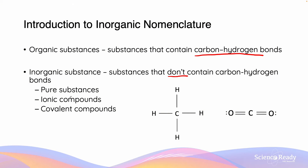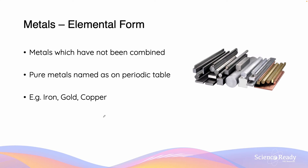Inorganic substances are pure substances, and they can be broken down into different subclassifications, including ionic compounds and covalent compounds. Metals are examples of pure substances. We describe metals to be in their elemental forms when they have not been combined.